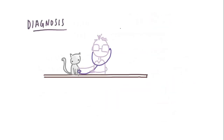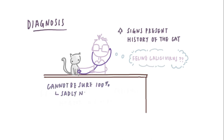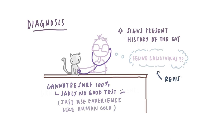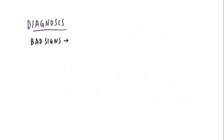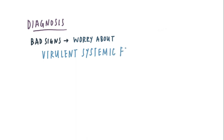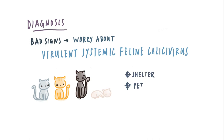Diagnosis. Pretty much by looking at the signs of your cat and also the history, your vet will presumptively treat your cat for feline calicivirus. Of course, your vet cannot be sure about it, but sadly there's just no good test available. He or she may revise the diagnosis if more specific symptoms arise. If your cat is showing really bad signs, we may start worrying about the virulent systemic feline calicivirus strain — especially if your cat has just been to a place with a lot of other cats, like out from a shelter or a pet hotel.